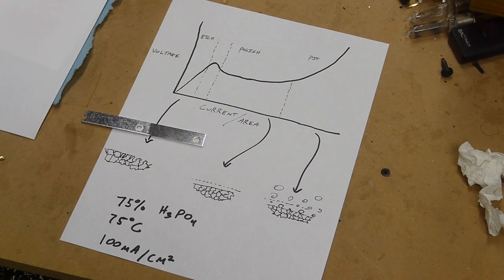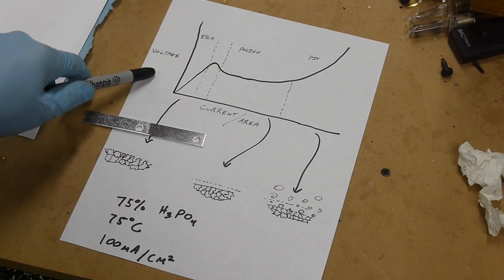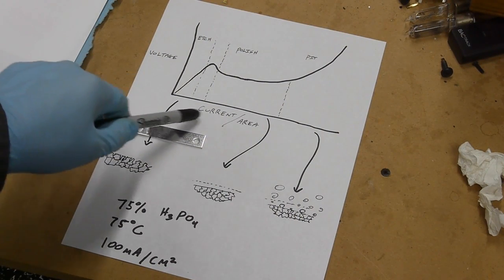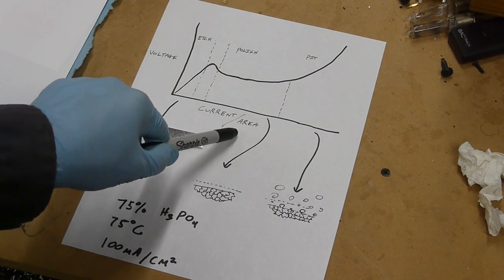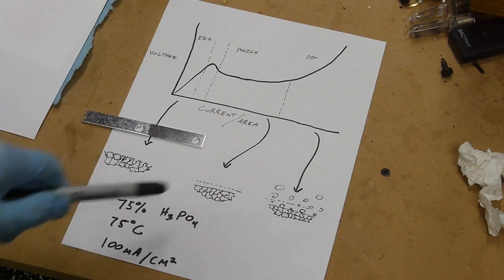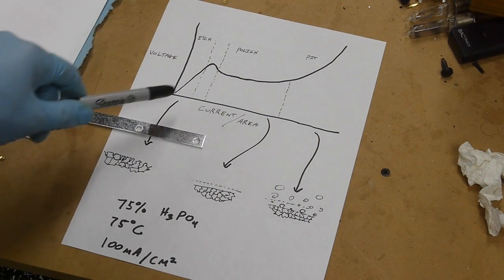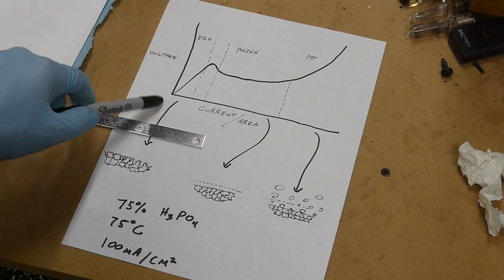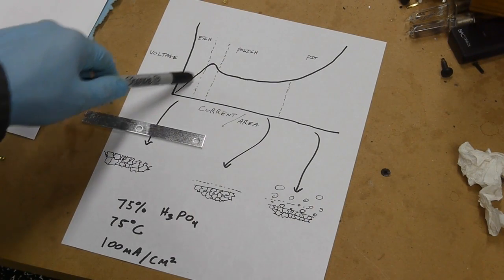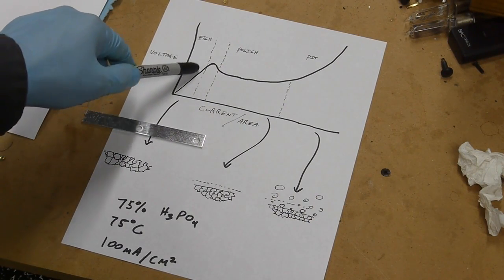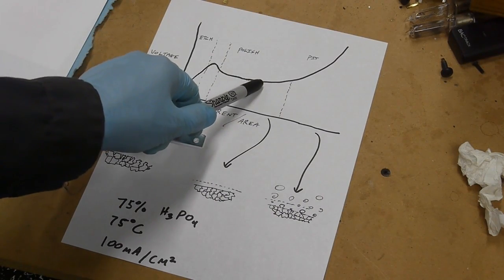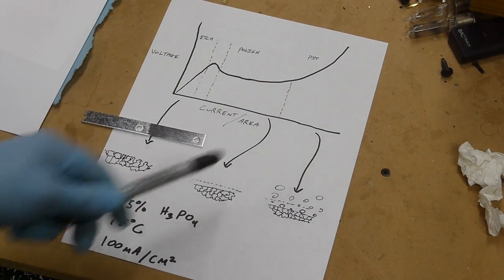I was able to find a chart on the internet that helped explain some of the results that I was getting. This shows voltage on the y-axis and current divided by area, that's the area of the part that we're going to polish, on the x-axis. And there's three distinct zones that are identified by the slope of the curve. So in this first region, it's mostly linear, but then there's a dip in a relatively flat region, and then it takes off over here.